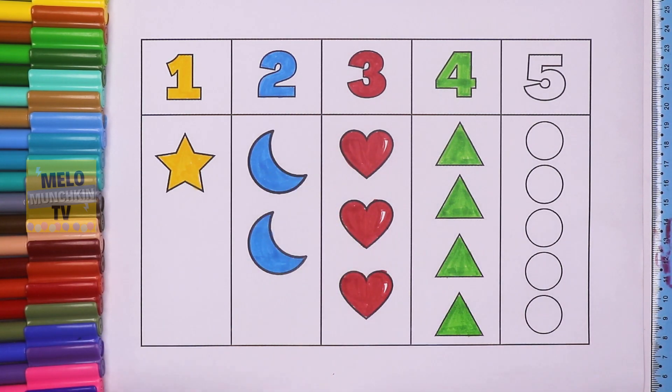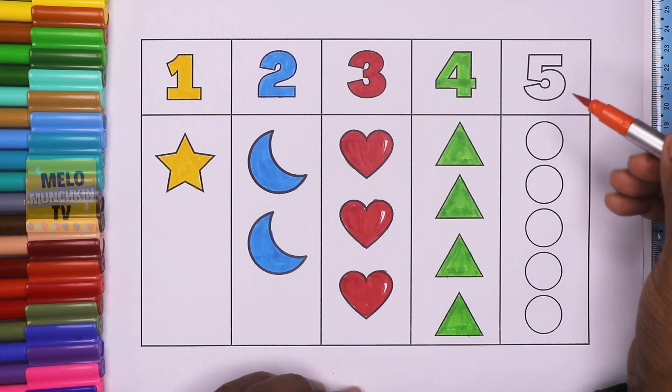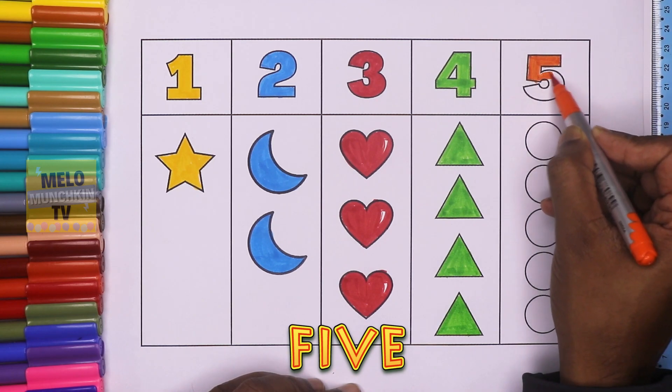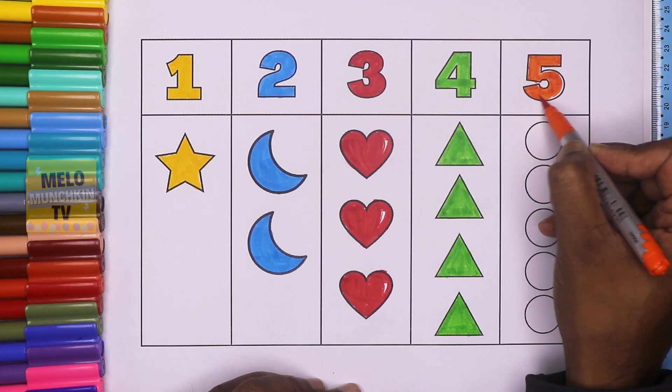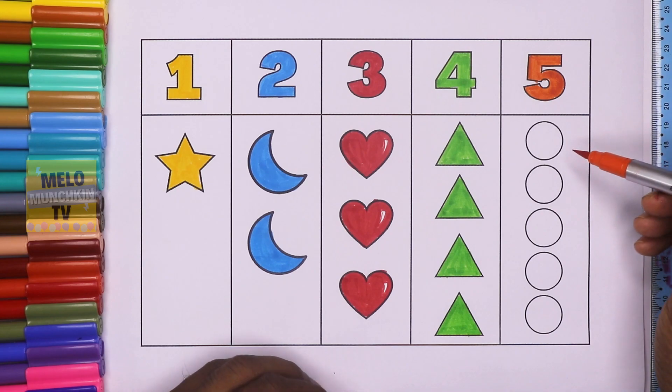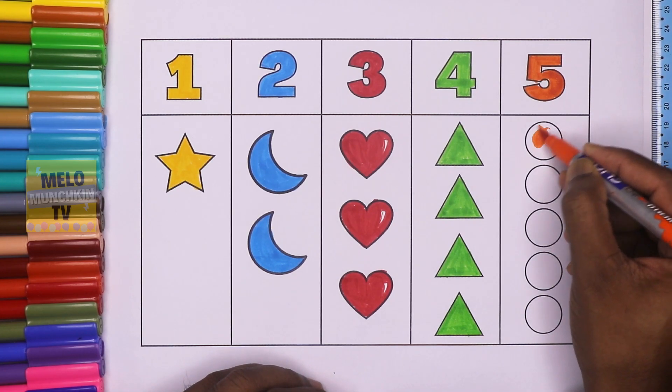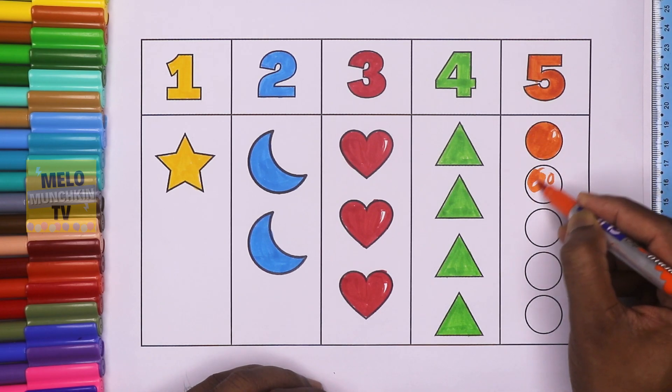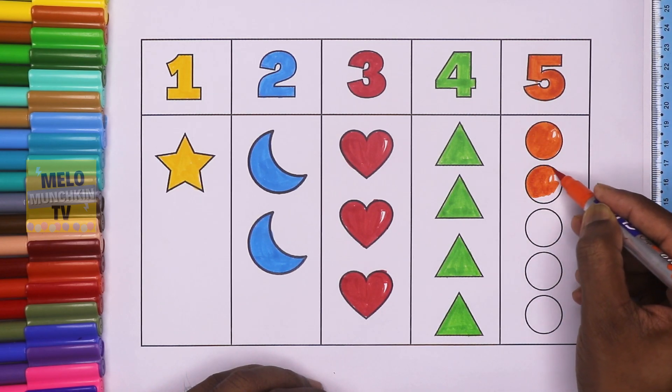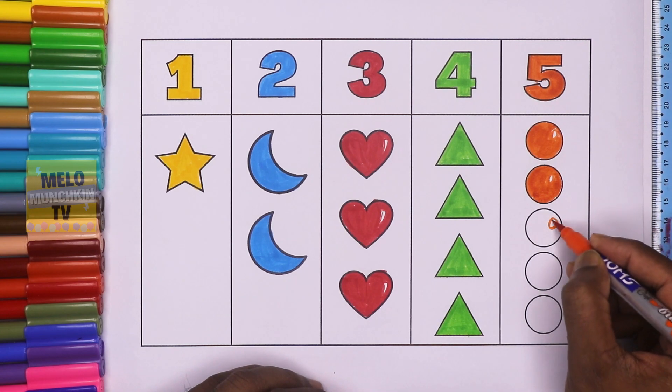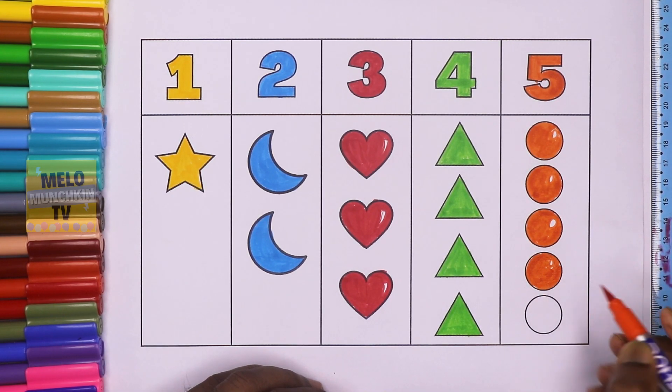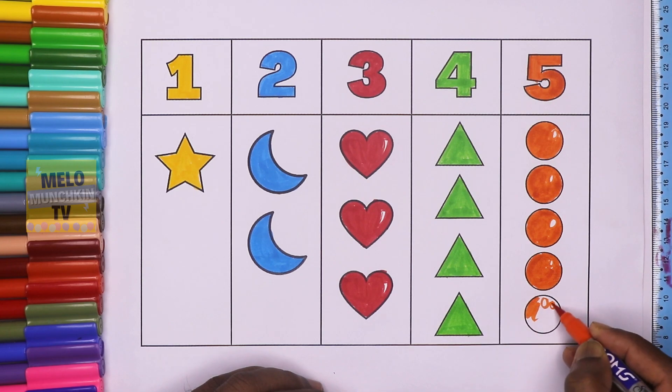Orange color. This is number 5. F, I, V, E. 5. Let's color 5 circles. 1, 2, 3, 4, 5.